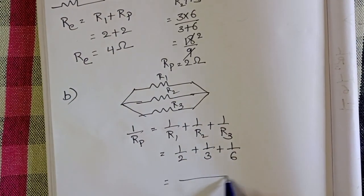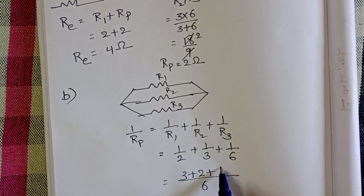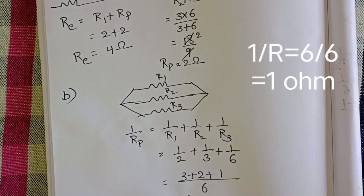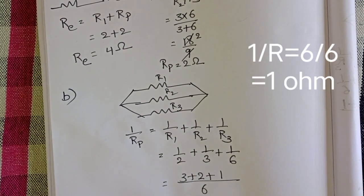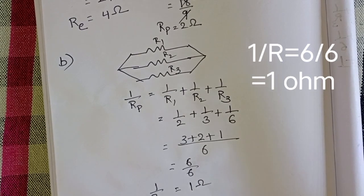LCM is 6. 2 3's, 3 2's and 6 1's. 6 by 6 is equals to 1. 1 by R is equals to 1 and also R is equals to 1 ohm.